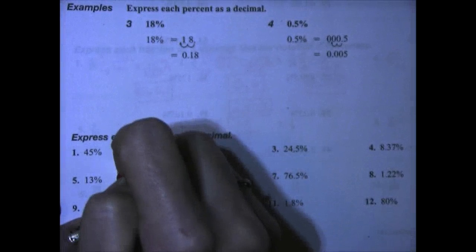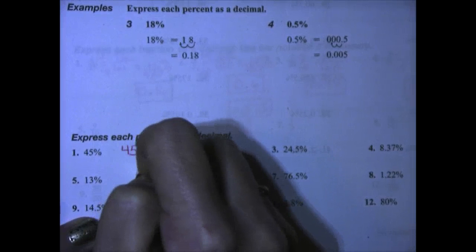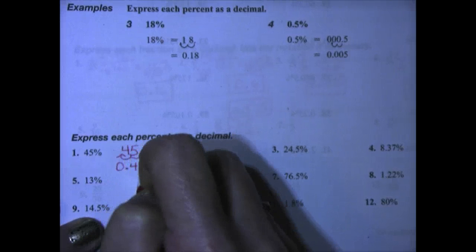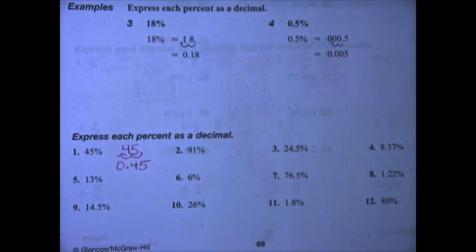45%. We've got 45 here. Move our decimal point two places to the left, and we get 0.45. Remember to get rid of the percent sign.